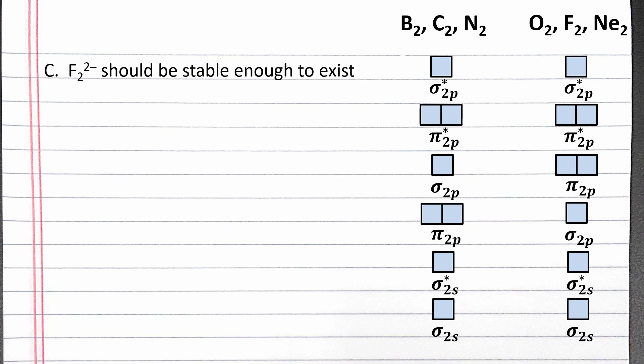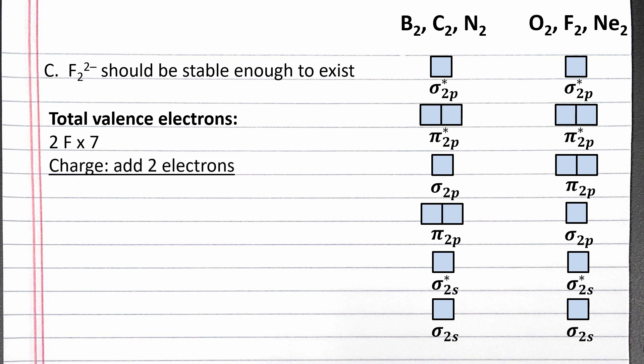To determine whether a species is stable enough to exist, it should have a bond order greater than 0. If it has a bond order of 0, then it is not stable enough to exist. To determine bond order, we need the total number of valence electrons first. Each fluorine has 7 electrons in the second shell. We need to add 2 more electrons given the 2− charge, for a total of 16 valence electrons. We'll fill in the molecular orbital diagram on the right, since we have a charged species of F₂. We start at the bottom and work our way up, and 16 electrons fill all the molecular orbitals in the diagram.